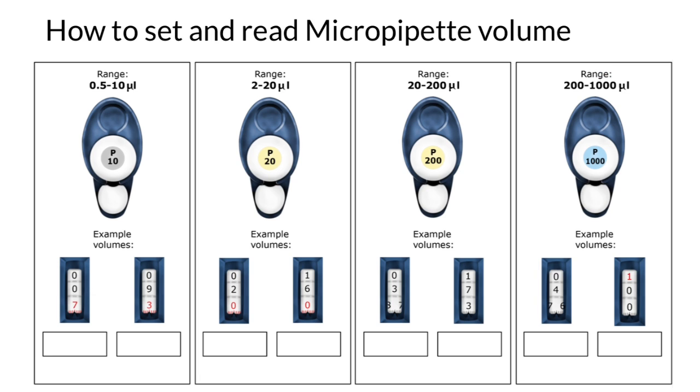Now let's check our first micropipette. So how to read what we have here? If you think that this is seven microliters, it is not so. Imagine that between black and red numbers, we put here a decimal point. So these numbers here mean 0.7 microliters.